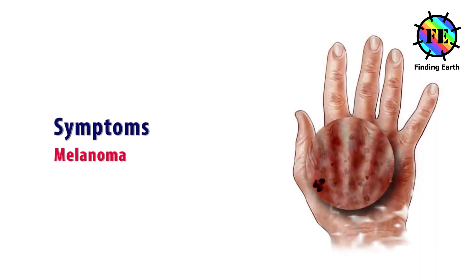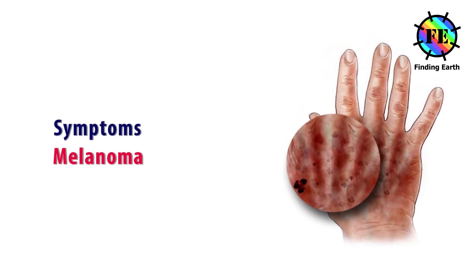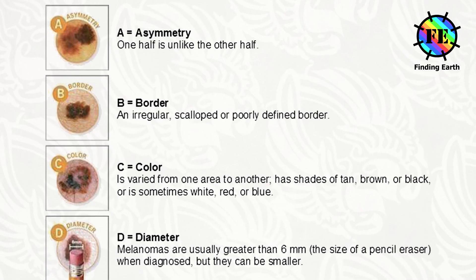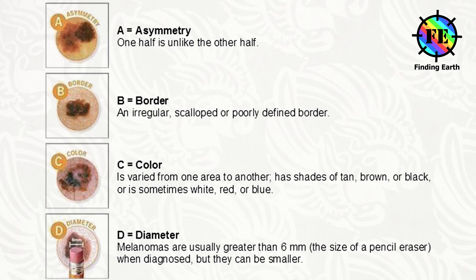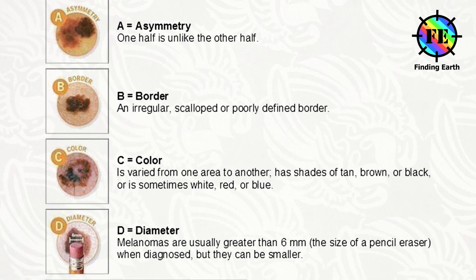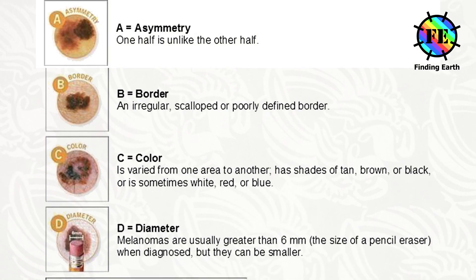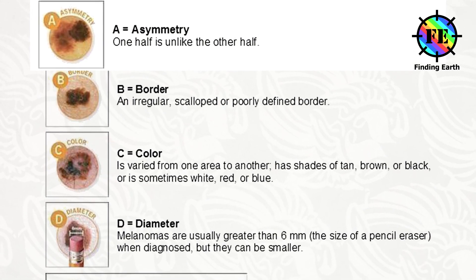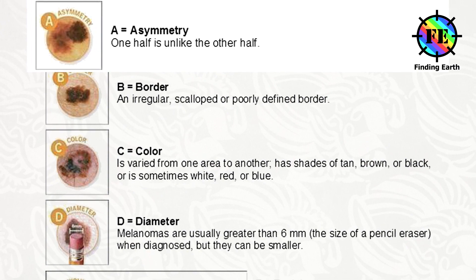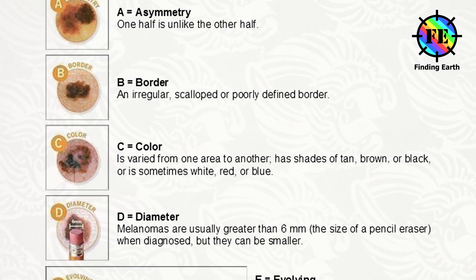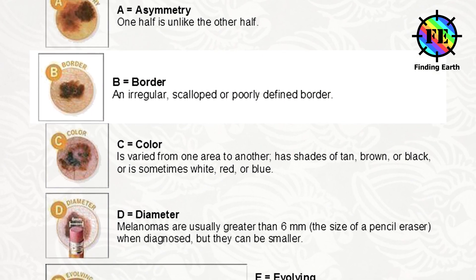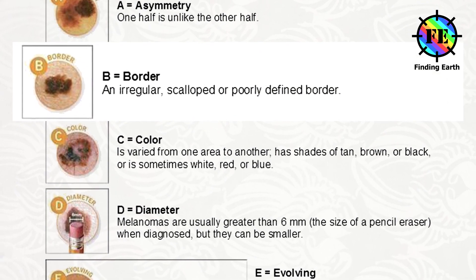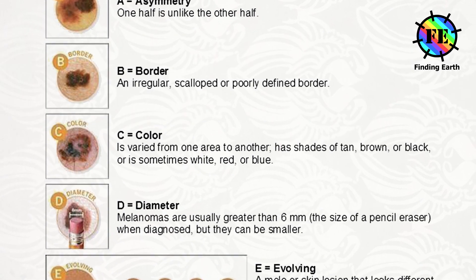Possible signs and symptoms of melanoma — the ABCDE rule. It is a guide to the usual signs of melanoma. A is for asymmetry: one half of a mole or a birthmark does not match the other. B is for border: the edges are irregular, ragged, notched, or blurred.